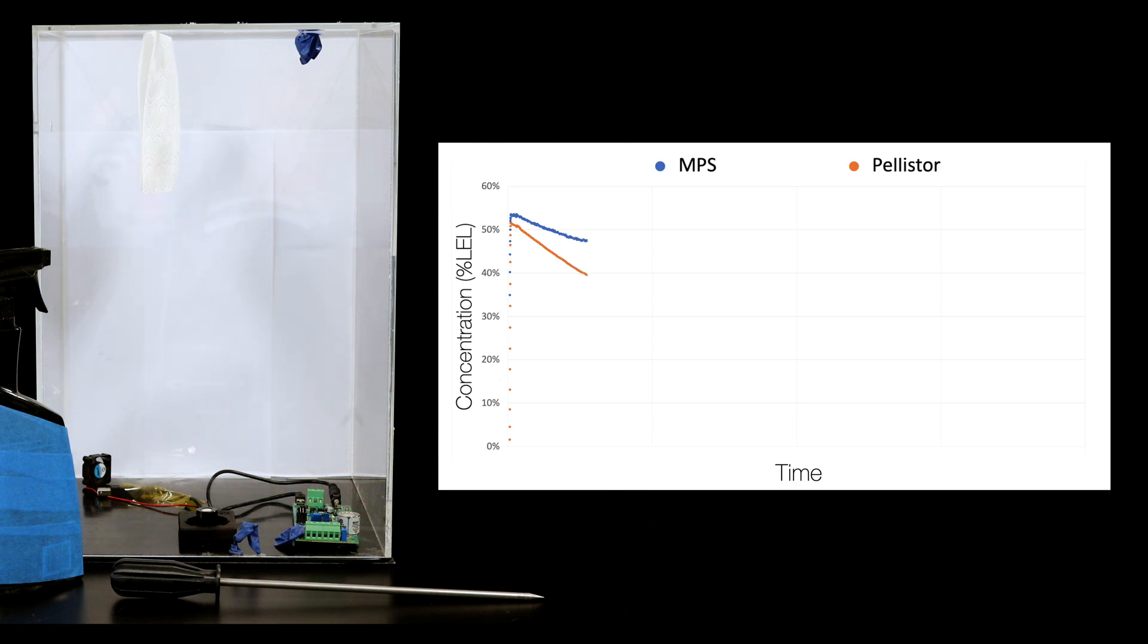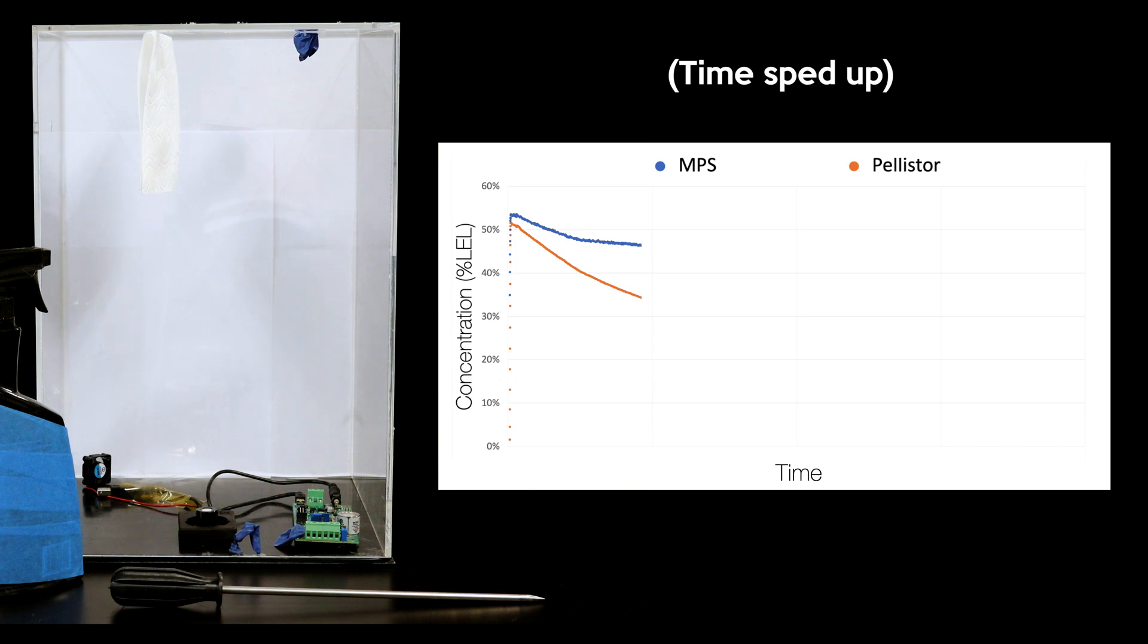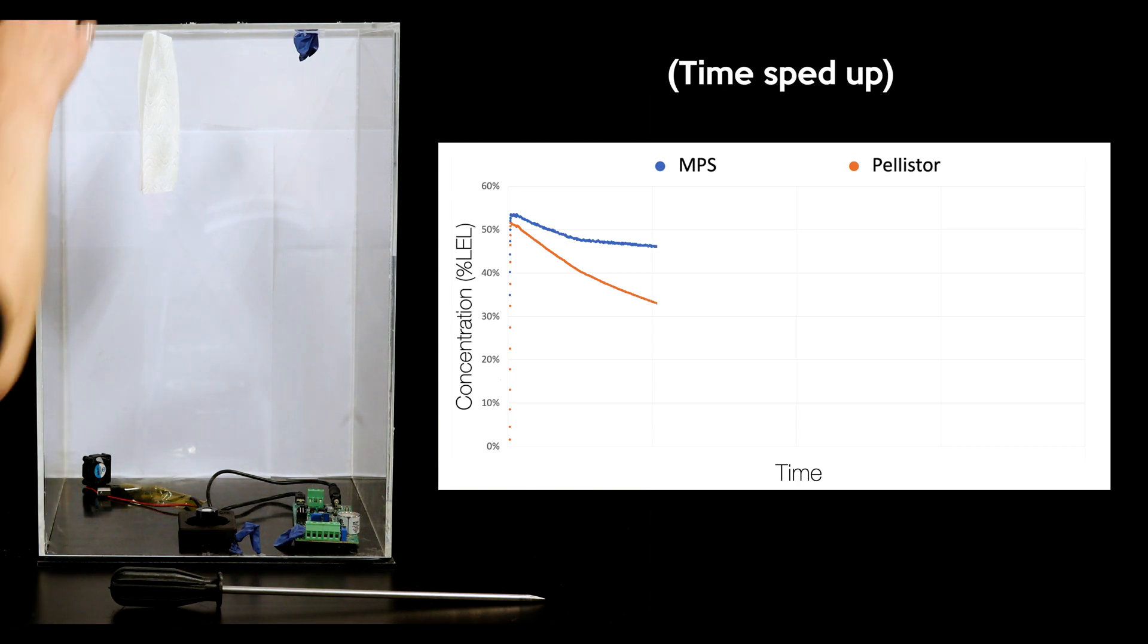Now that the methane is evenly distributed in the chamber, I will spray in a silicone-containing substance and measure the response of each sensor. The methane concentration in the tank will allow us to see any response degradation from the poison.